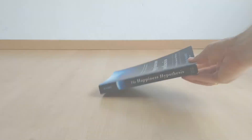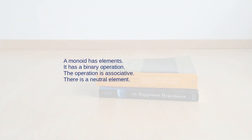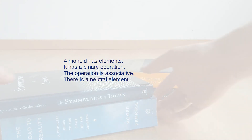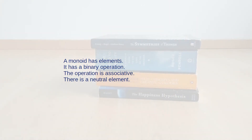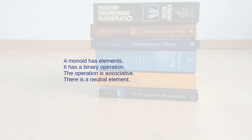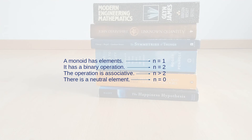We have reached a point where we have all the pieces of a typical monoid. We have a set of elements — piles of books — and we have a binary operation: stacking. The operation is associative and it has a neutral element. That is the definition of a monoid. A monoid is any set of elements with a binary operation that satisfies these rules. Now, like many definitions in abstract algebra, this one seems a bit arbitrary at first. If someone gave you this definition without any context you'd probably think it's just some arbitrary set of rules — why exactly these rules and not others?